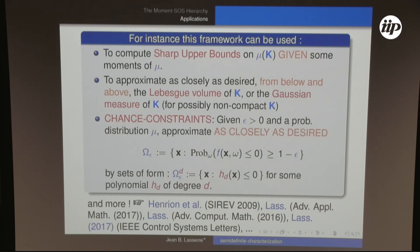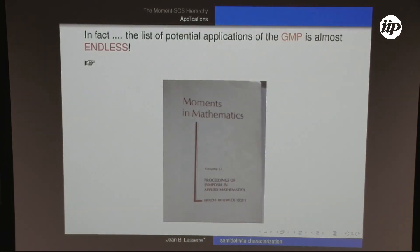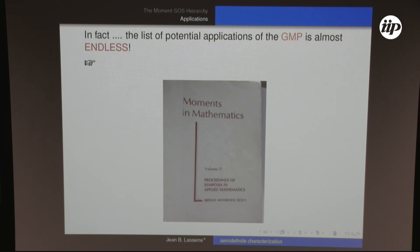The list of potential applications of the GMP is almost endless. There is a nice book written in 1987 collecting contributions by leaders in operator theory, geometry, statistics, and functional analysis, all describing how the generalized moment problem can be useful — but written four years before the Schmüdgen and Putinar theorems. So they were always frustrated, saying 'it's very nice, but you don't know how to compute it.' This book shows many theoretical applications of the GMP, and now computation is possible.